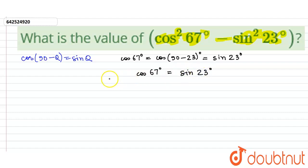If we square both sides, we get cos²67° minus sin²23° equals zero.